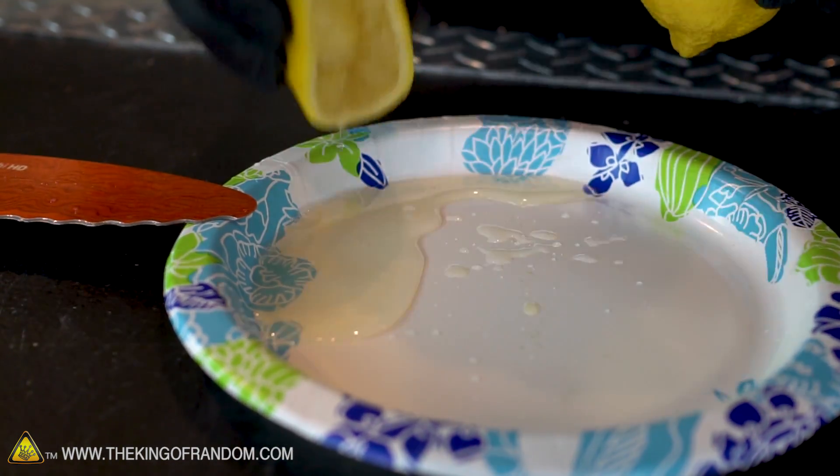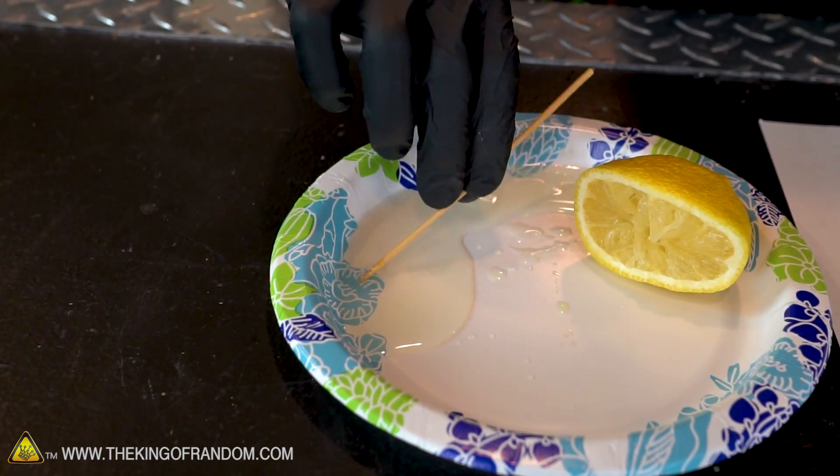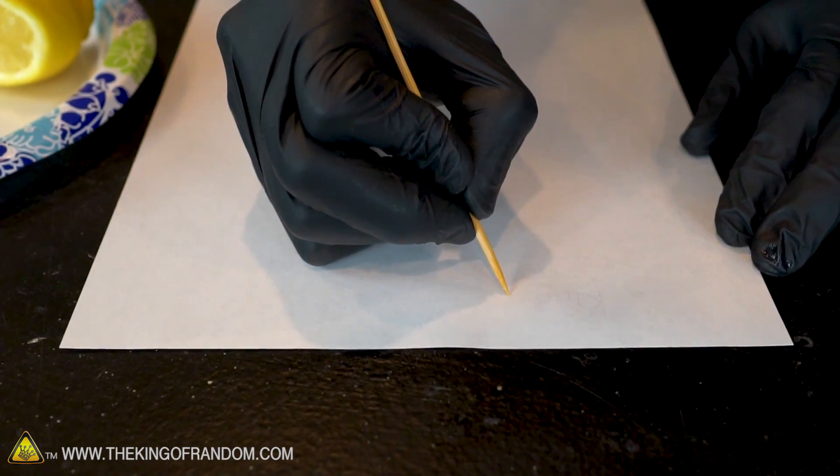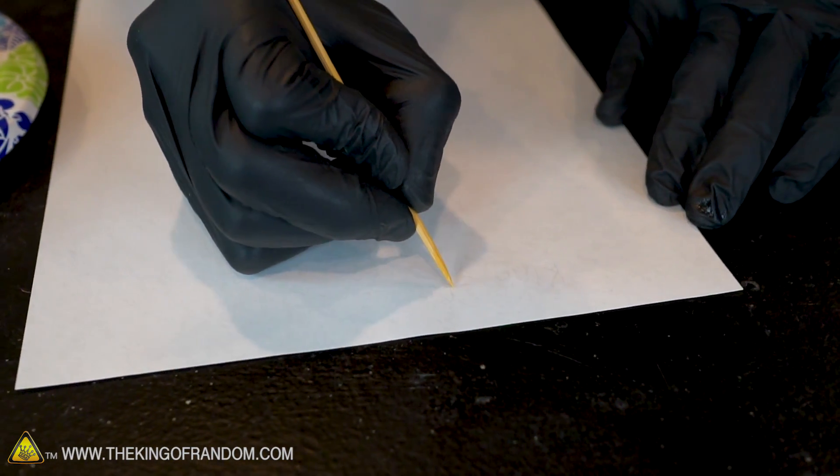Now let's take a piece of bamboo skewer or a toothpick, dip it in the juice, and try writing on our paper. Dip the bamboo skewer in the lemon juice so it has a little bit of a coating on it, and then use that as a stylus to write on a piece of paper.